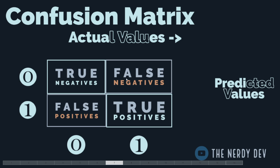The third cell represents False Positives: the actual value was 0, but the model incorrectly classified it as a positive class, or 1. So the model falsely predicted it to be 1 when it was actually 0.